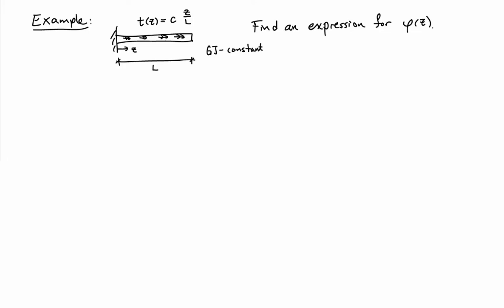In this example, I'd like to consider a round torsion bar of length L that has a constant GJ, subjected to a distributed torque t that's equal to C times Z over L. C is a constant, so we have a linearly distributed surface torque along the length of the bar. I'd like to find an expression for the rotation of the bar at any location Z along its length.